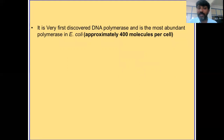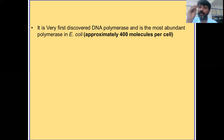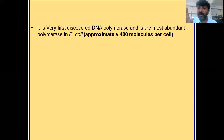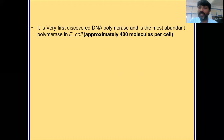This enzyme is not only the first discovered DNA polymerase, but also the most abundant DNA polymerase in E. coli. There are five DNA polymerases in E. coli, and DNA Polymerase I is present at approximately 400 molecules per single bacterium. The remaining DNA polymerases (II through V) are present in only double-digit numbers — fewer than 50 molecules per cell — underscoring the importance of Pol I in DNA metabolism.